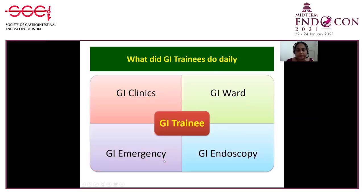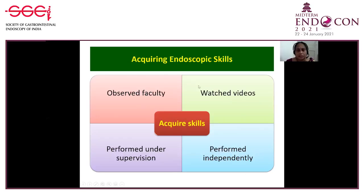In the pre-COVID era, training was dependent on four components: acquiring knowledge, acquiring skills, applying skills under supervision of the mentor, and then doing it independently while assessing the patient's response. A committed trainer and high endoscopy volumes were key facilitators. A GI trainee daily goes to the GI clinic, ward, emergency, and endoscopy suite — learning to integrate all components of clinical and endoscopic care. Endoscopy skills were acquired by observing faculty, watching videos, performing under supervision, and later performing independently.